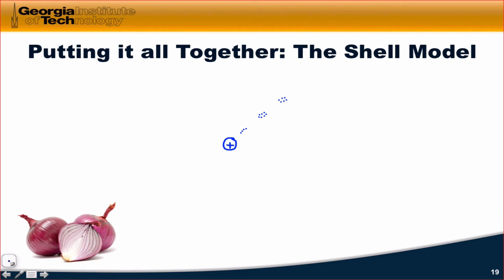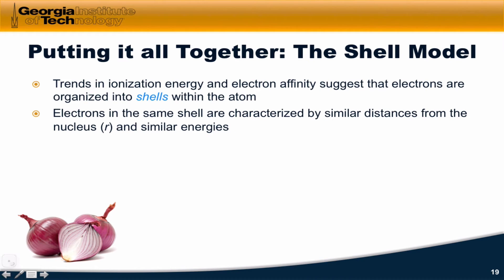Electrons appear to be grouped into what are called shells at approximately the same distance from the nucleus. Electrons within the same shell have similar distances from the nucleus and similar energies, as suggested by the ionization energies.